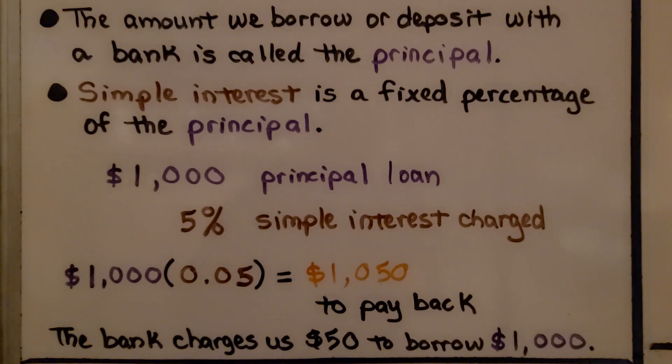The amount we borrow or deposit with a bank is called the principal. Simple interest is a fixed percentage of the principal.